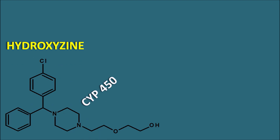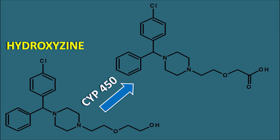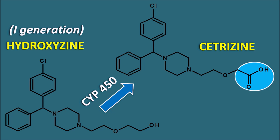Hydroxyzine can undergo metabolism by the cytochrome P450 system, producing an active metabolite. Both structures are similar with a small difference at the terminal end — a carboxylic acid is produced, meaning the alcohol is oxidized to a carboxylic acid. This metabolite is the well-known antihistamine cetirizine. Hydroxyzine is a first-generation antihistamine whereas cetirizine is a second-generation antihistamine, which cannot cross the blood-brain barrier easily and therefore produces less sedation.